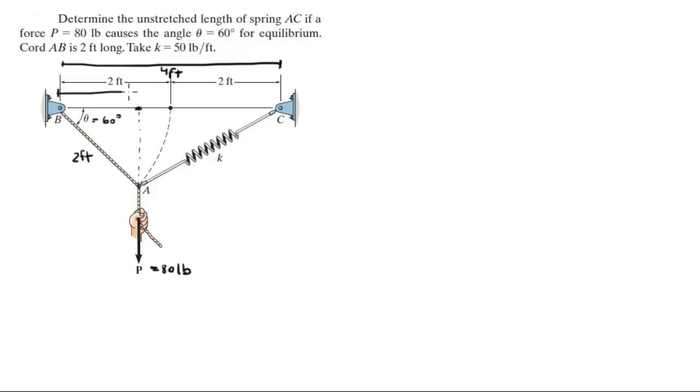This length right here can be found because we got the hypotenuse of 2 feet. Let's call this length B and let's call this length right here dotted line A. So A is equal to 2 sine of 60 which is 1.73 feet. B is equal to 2 cosine of 60 which is equal to 1 foot. So this is 1, this is 1.73.